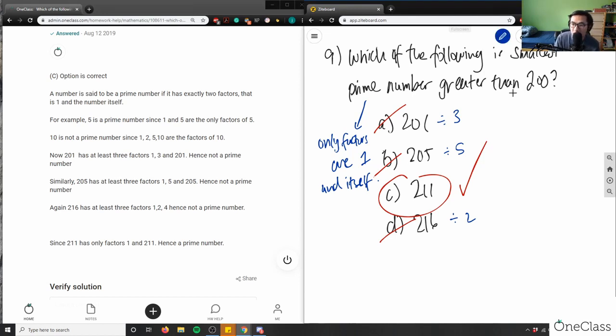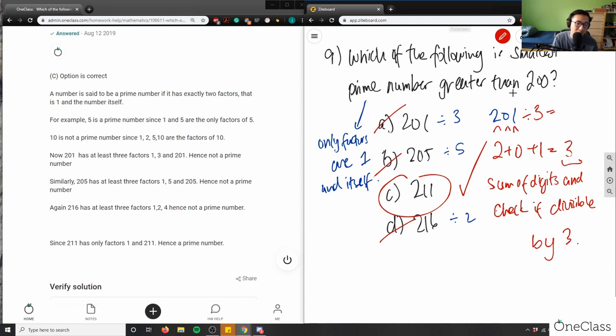Let me write this cheat down. If I have 201, I'm going to add the digits together. I'm adding 2 plus 0 plus 1. So 2 plus 0 plus 1 equals 3, and then you take this number. Is 3 divisible by 3? If yes, then this entire number is divisible by 3. You take the sum of digits and check if divisible by 3.